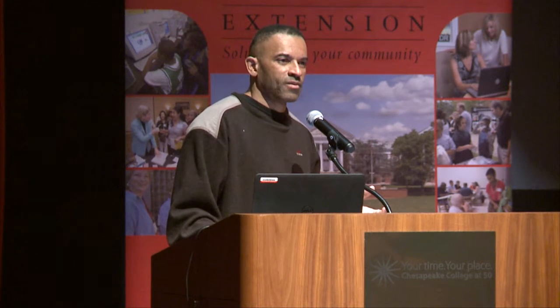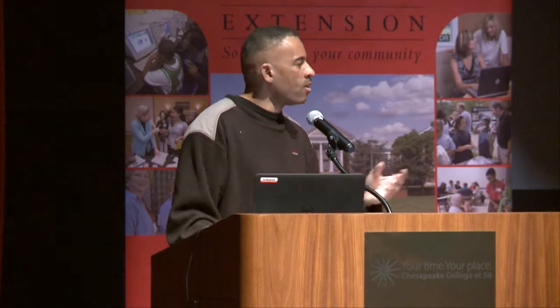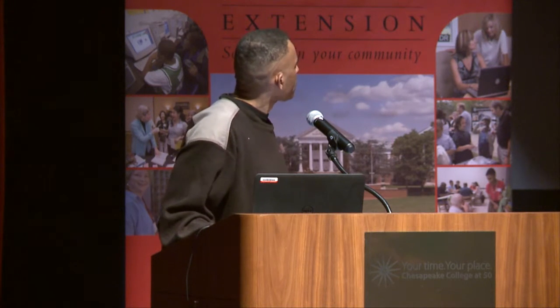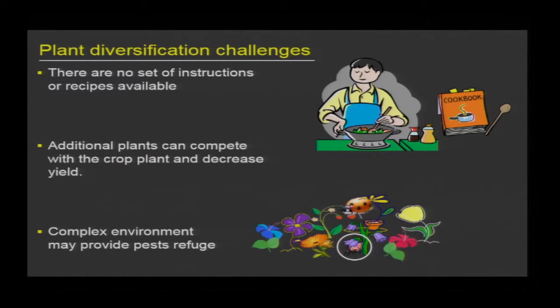There are also no set recipes with respect to how you should incorporate plant diversification within a cropping system. If you think about a pesticide label, everything you need — when to apply, how much, how often — is on a label. But for plant diversification, there are no recipes. Additional plants can also compete with the crop since they're looking for similar resources. And while people often use plant diversification to enhance the number of natural enemies, it can also hide pests away from those natural enemies — for instance, a coccinellid trying to find an aphid may have difficulty when there's enhanced diversification in the system.